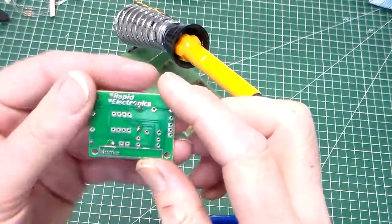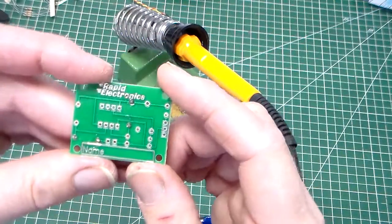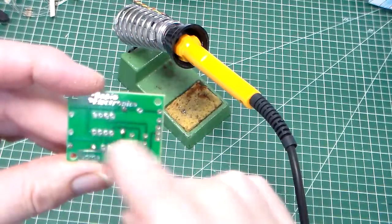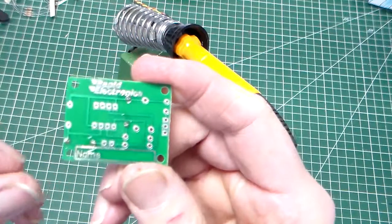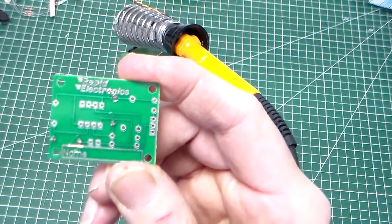And there are the completed two resistors soldered in neatly. That is fitting the two resistors, R1 and R2.